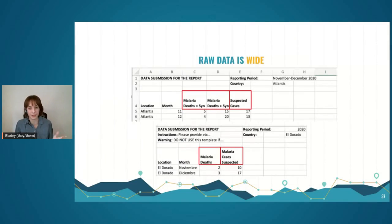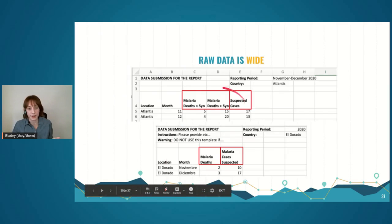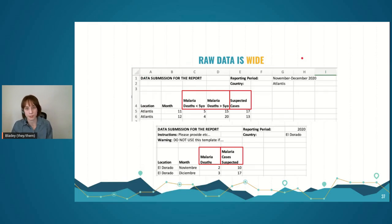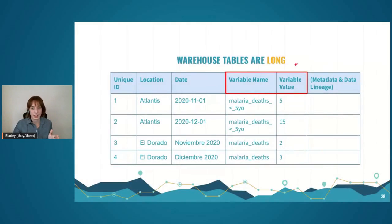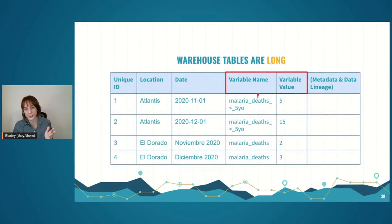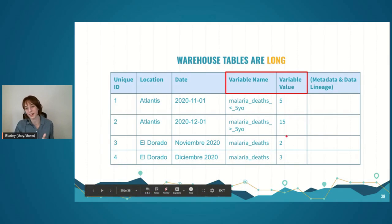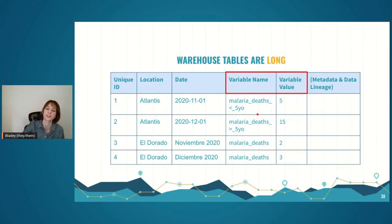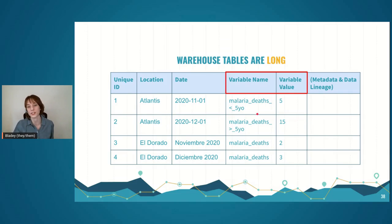We've developed a very generalized warehousing format that supports the ELT architecture really well. Here's a specific example with our mock Atlantis and El Dorado data: I'm highlighting the variable names, which we'll have to transform downstream. This particular dataset is in what you'd call a wide table format. Our warehouse tables have been transformed into an extremely long format where the variable names themselves are in a column next to the variable values. This means we can apply our variable name transformations downstream, and that generalized warehousing supports the frequently changing, chaotic situation we're in.